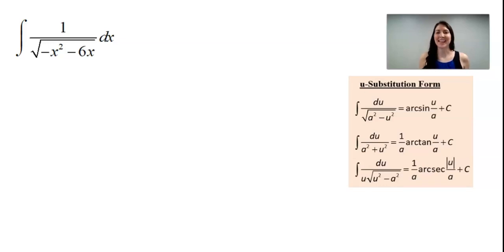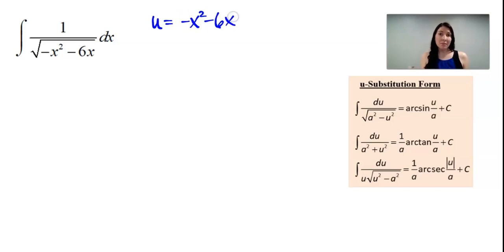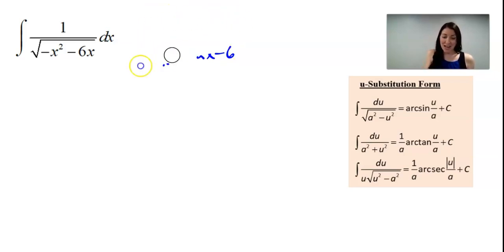This problem sure can be tricky. Oftentimes students will recognize it's probably a u-substitution problem, but the question is what to make as the u. Some people will say the u should be what's underneath the radical. That's sometimes a good idea, but notice when you take the derivative with respect to x, you get negative 2x minus 6, which does not appear anywhere in the problem. So that tells me that is not going to be the way we use u-substitution here.